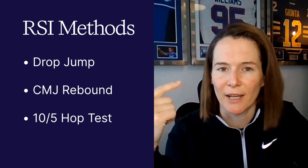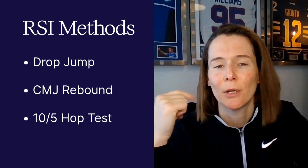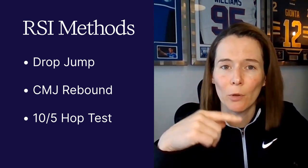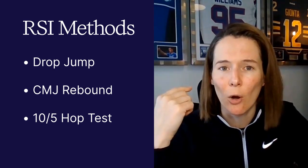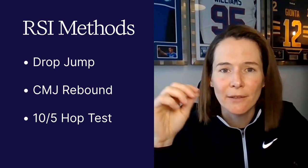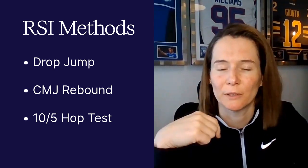So just a quick example there of the value of diving into the underlying measures beneath the RSI calculation. I'm going to talk about three common methods for assessing RSI with jump tests: the drop jump, where we use a box at a fixed height to assess someone's reactive strength; the counter movement rebound jump, where rather than stepping off a box they do a counter movement jump straight into a hop; and also the 10-5 hop test, which involves repeated hops.